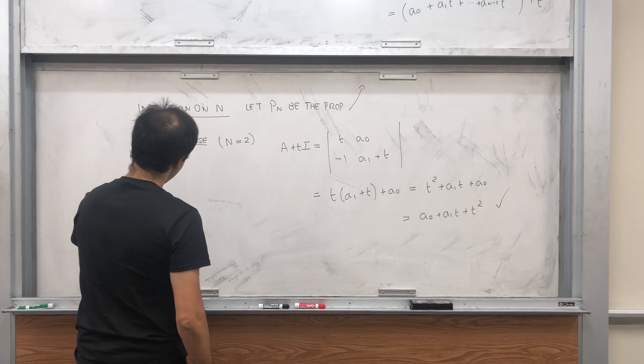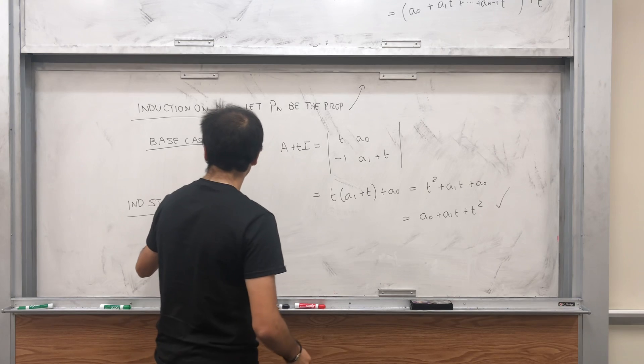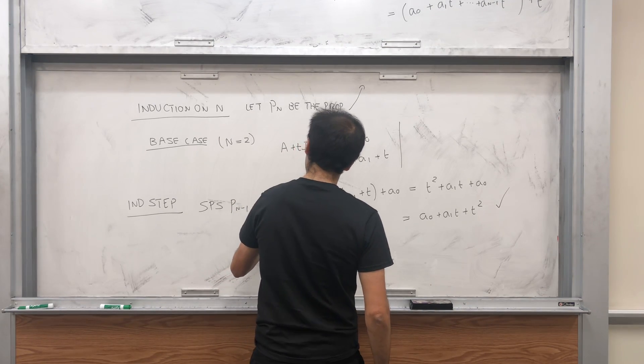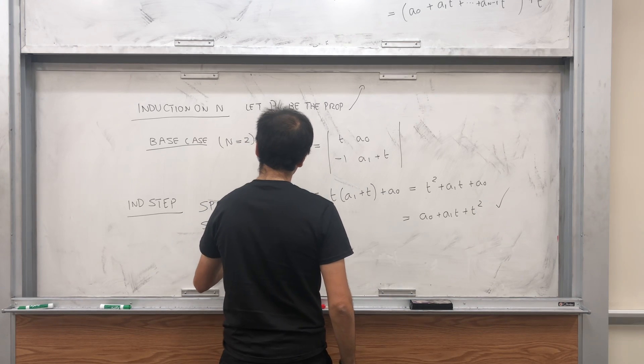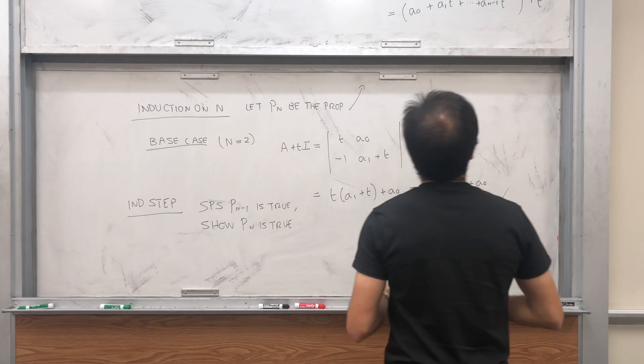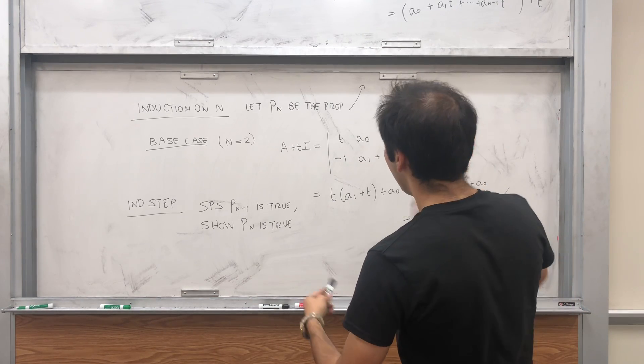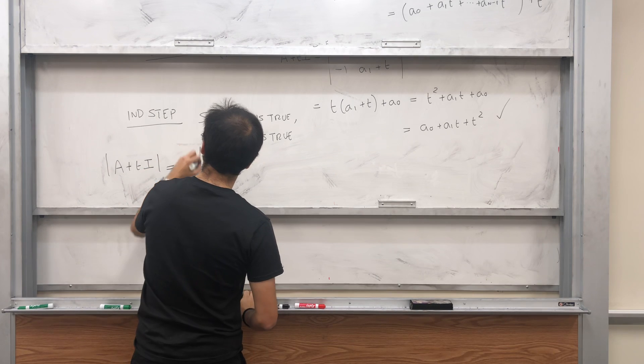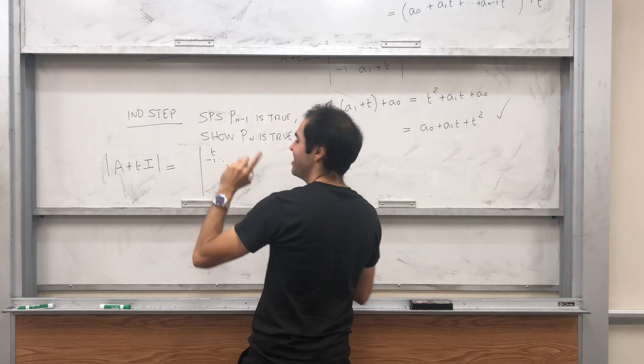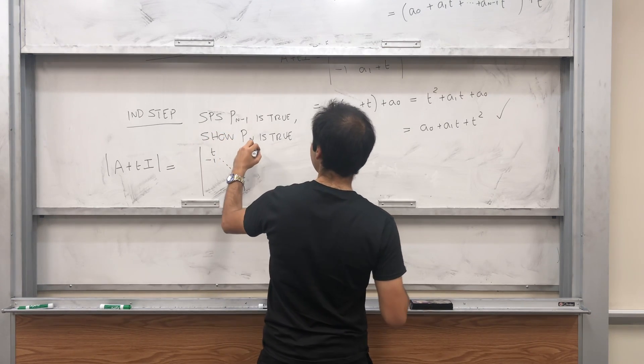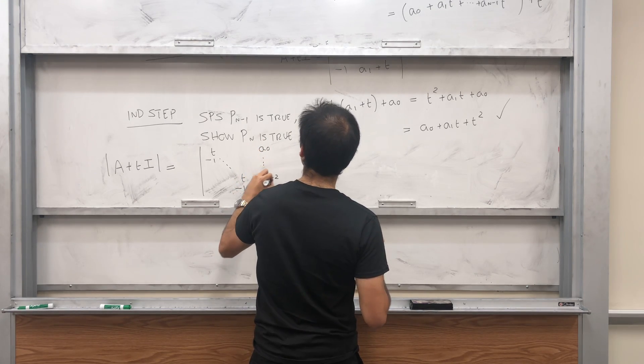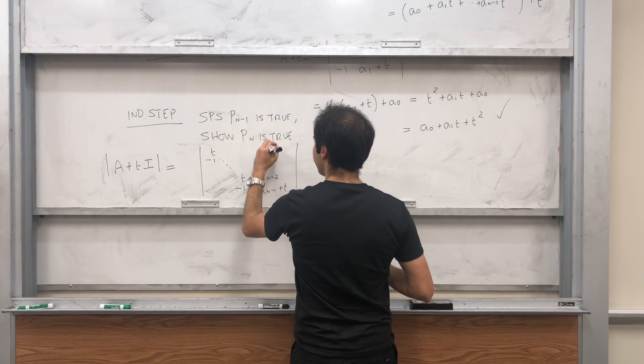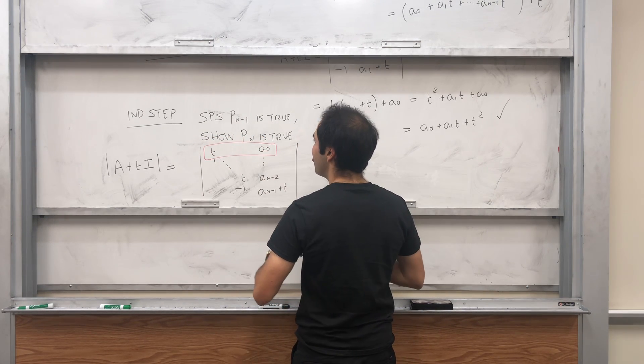And now let's do the inductive step. So suppose P_{n-1} is true. So suppose it is true for all smaller determinants. And then show P_n is true. All right. And then, let me see what's the best way of explaining this. So yeah, how about we just expand it along the first row. So A plus TI. Again, I'd like to remind you, it's just a bunch of T's. It's such a tease. Anyway, T is a minus 1. So A_0, A_{n-2}, and A_{n-1} plus T.